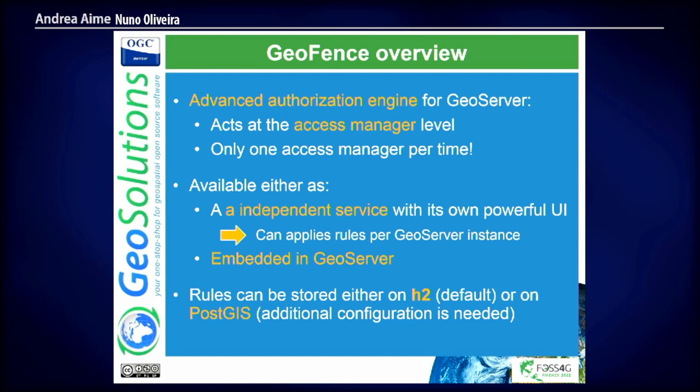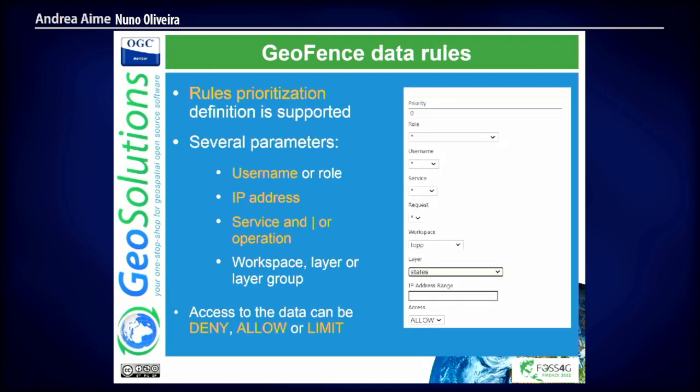GeoFence data rules allow us to define many more parameters. For example, we can use the user name — unlike vanilla GeoServer, now we can define data rules with the user name, not only with roles. With IP address: you know that users coming from a certain organization with this IP address should be able to see everything — we define it with IP addresses. Service and operation. And we now have three types of data access: Deny — you cannot see it. Allow — you can see it. And Limit — you'll be able to access the data, but the limit rule will restrict what you can see: the attributes you can obtain and even the actual geographical area. This goes all the way down to the query sent to the database. For example, if you define a rule that the user cannot see certain attributes, and a WMS request uses a style that needs to access that attribute, it will be refused.